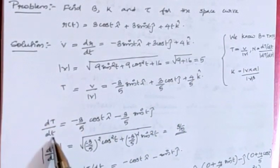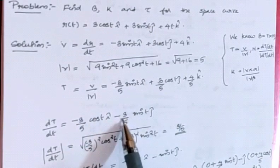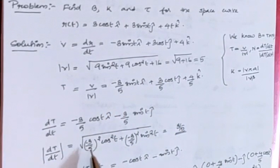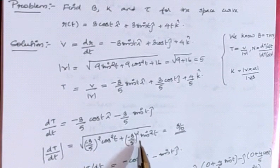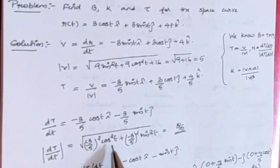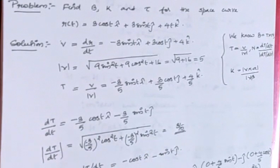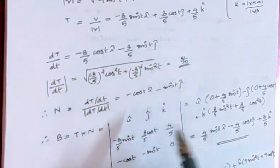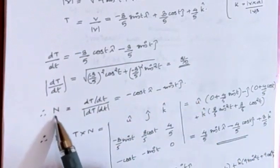To find N, we compute dT/dt = (-3/5)cos(t)i - (3/5)sin(t)j + 0, since (4/5)k is a constant. The magnitude |dT/dt| = √((−3/5)²cos²t + (−3/5)²sin²t) = 3/5. Dividing dT/dt by its magnitude, the factor 3/5 cancels, giving the unit normal N = -cos(t)i - sin(t)j.